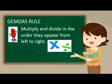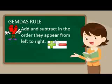Third, multiply and divide in the order they appear from left to right. Lastly, add and subtract in the order they appear from left to right.